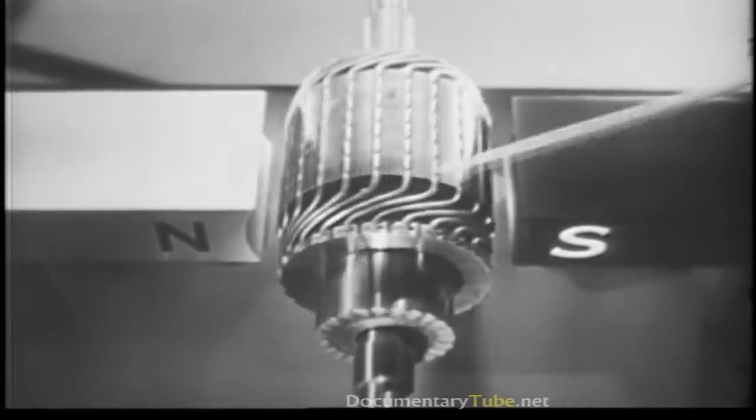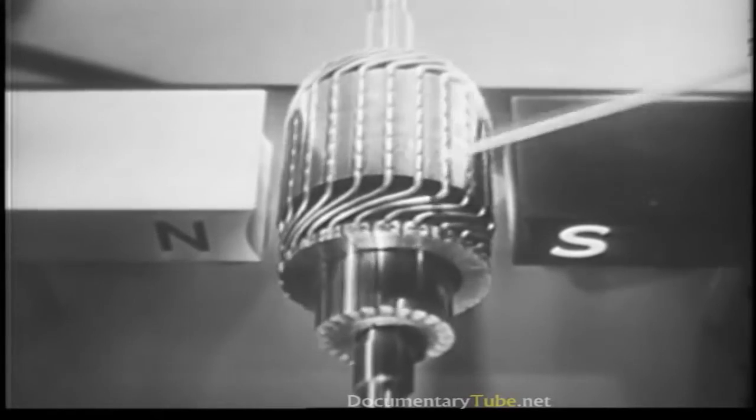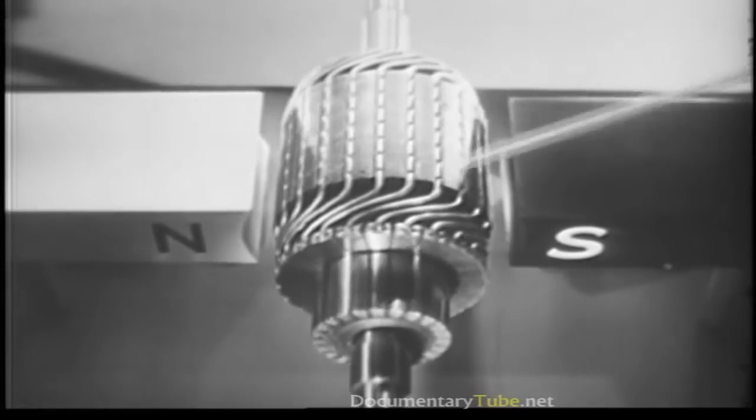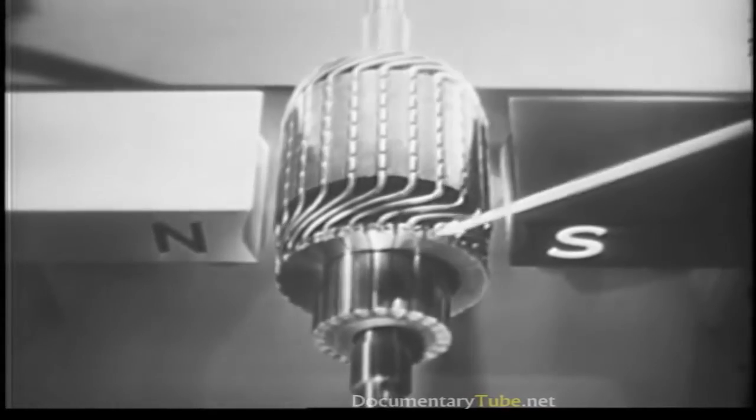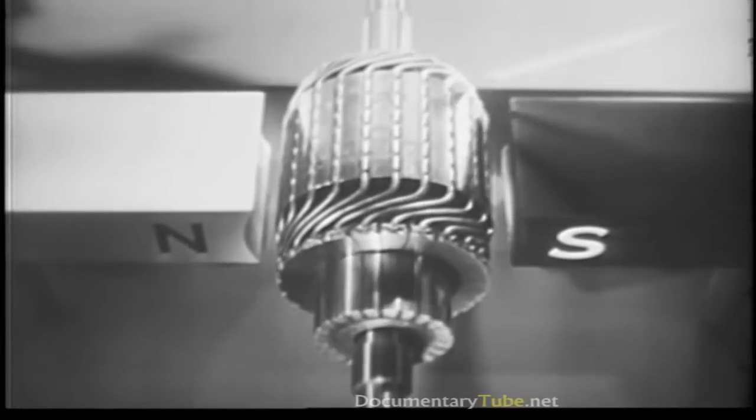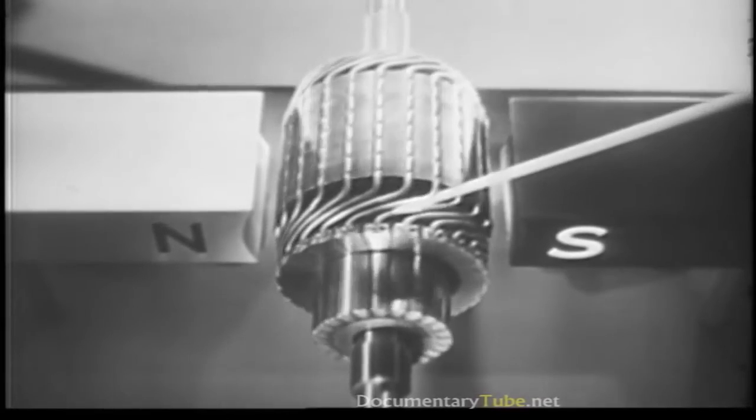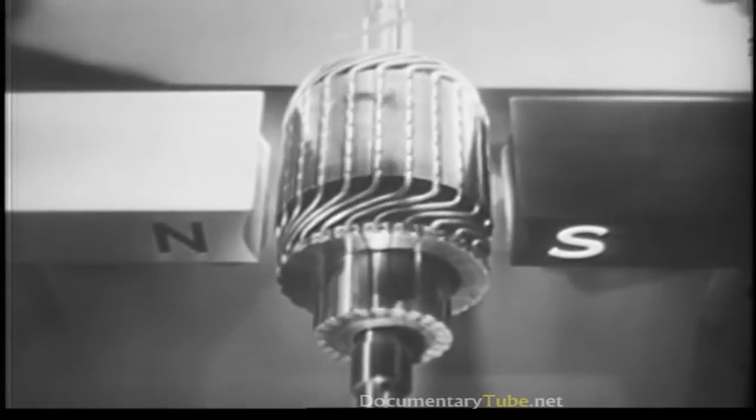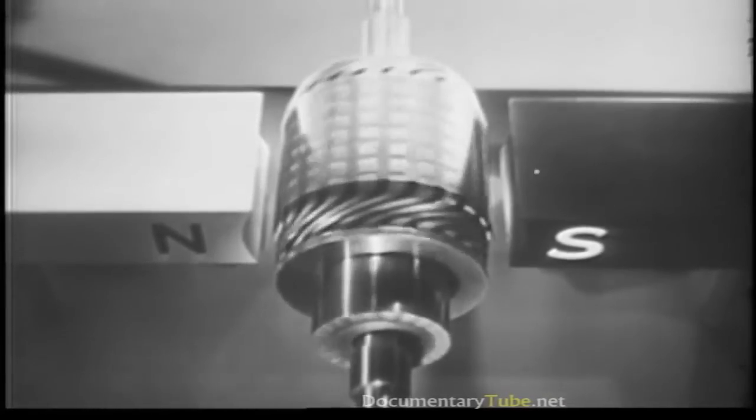Now if we space these windings around an iron core, we have what is called an armature. The actual connections and arrangements of the windings are such as to allow a maximum amount of current to flow through the armature coils when they are in their proper relationship to the pole pieces. This allows each winding to add its turning effort to the others, so that they all work together to rotate the armature, as the complete assembly is called.